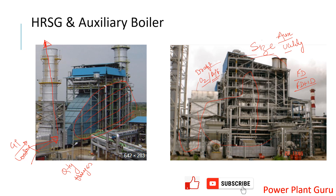Another point is that in the HRSG, steam generation is totally dependent upon gas turbine loading. However, there may be supplementary firing — in-line burners in line with the flue gas coming from the gas turbine. Running these additional fuel-fired burners gives two benefits: one is an increase in steam quantity, and another is control of steam temperature. Many times without supplementary firing you lose temperature and steam temperature goes down, so supplementary firing gives you that level of control.